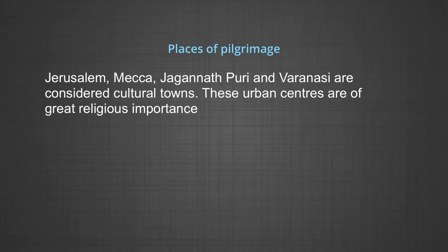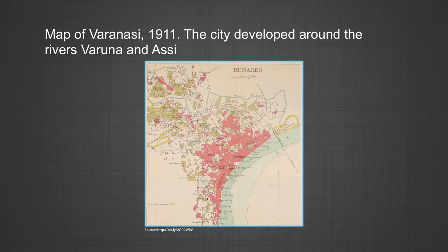Cultural towns: Places of pilgrimage such as Jerusalem, Mecca, Jagannath Puri, and Varanasi are considered cultural towns of great religious importance. Additional functions which cities perform include health and recreation like Miami and Panaji, industrial functions like Pittsburgh and Jamshedpur, mining and quarrying like Dhanbad and Broken Hill, and transport functions like Singapore and Mughal Sarai. The map of Varanasi from 1911 shows the city developed around the rivers Varuna and Assi.